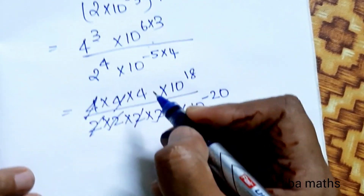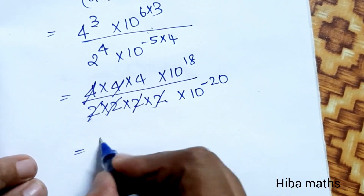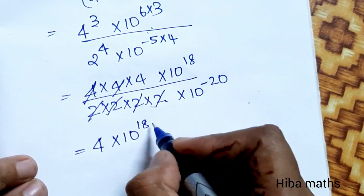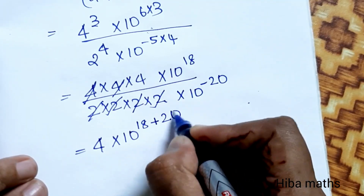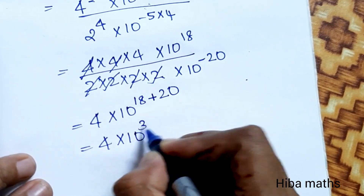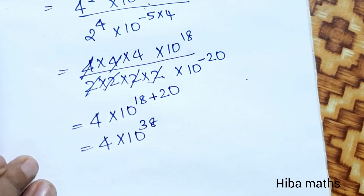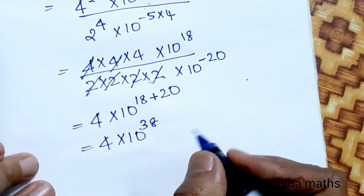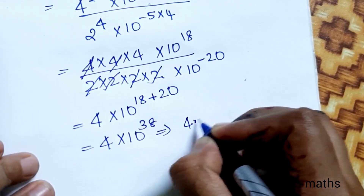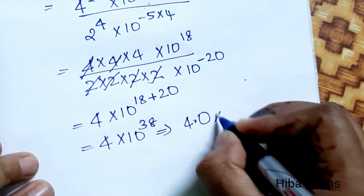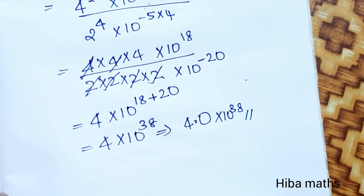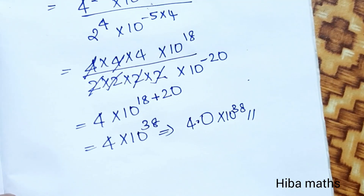Cancel: 2, 2, 1, 4 cancel. Adding 9 and 12, 4 — into 10 power 18, divide by minus 20. This gives 4.0 into 10 power 38. It's 2. Thank you so much for watching.